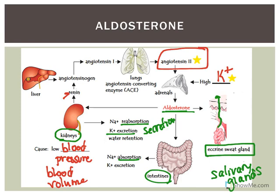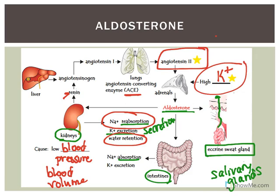Renin is an enzyme that converts angiotensinogen to angiotensin 1. Angiotensin 1 is then converted to angiotensin 2 using the enzyme ACE (angiotensin converting enzyme). Angiotensin 2 increases aldosterone production. With low blood pressure or low blood volume, aldosterone increases sodium reabsorption; if the kidney tubule is permeable to water, water is retained, blood volume goes up, and blood pressure increases. So the two major stimuli for aldosterone secretion are high potassium levels and angiotensin 2.